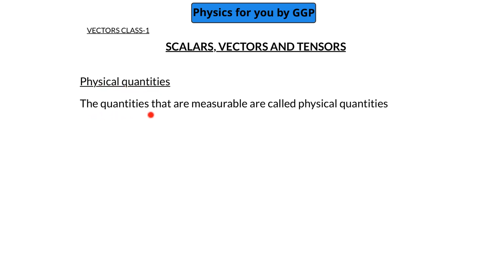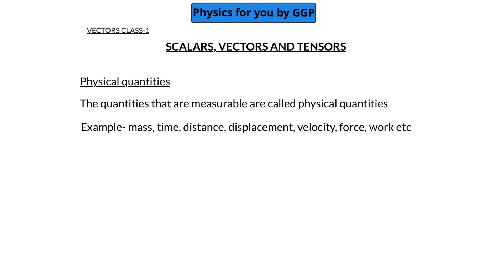Physical quantities means the quantities which can be measured. In physics, we discuss physical quantities — things we can measure, such as the length of an object, the mass of an object, the weight of an object, force acting on an object, speed, velocity, and so on. These physical quantities are classified into two types: scalars and vectors.